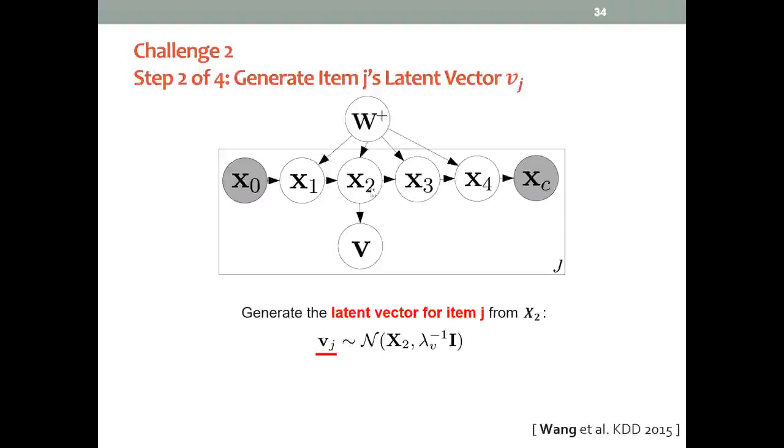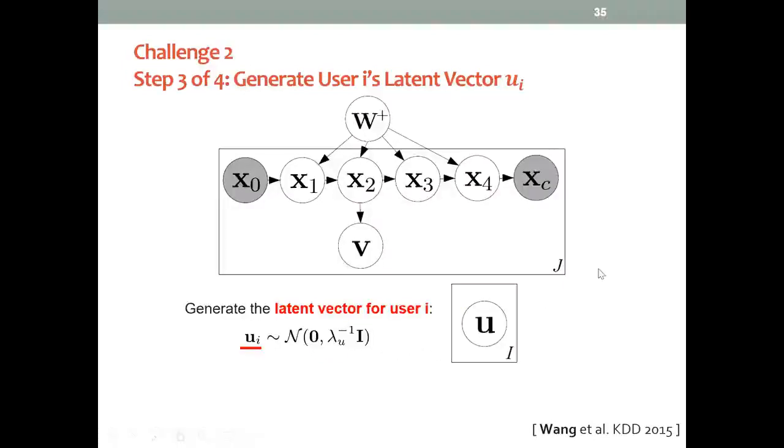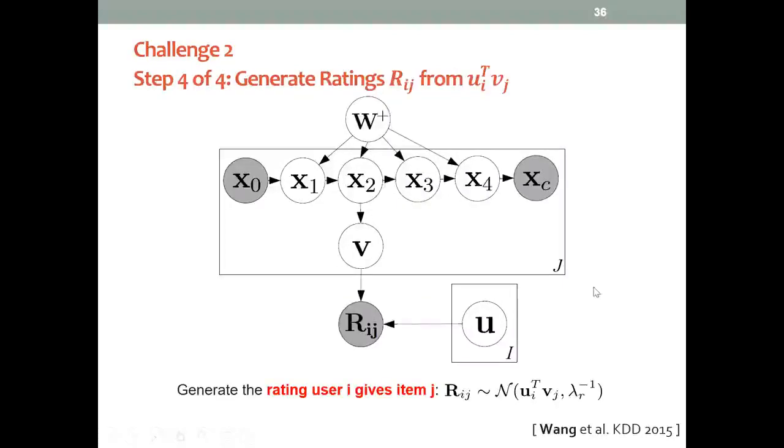Similarly, we can generate the latent factor for each user i from a Gaussian distribution with zero mean. Finally, we can generate the rating that user i gives item j from a Gaussian distribution parameterized by the inner product of their corresponding vectors.